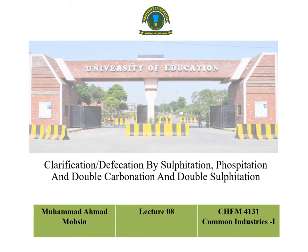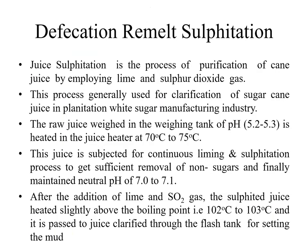Today we will discuss sulfitation, phosphatation, and double sulfitation carbonation of the clarification process. Juice sulfitation is the process of purification of cane juice by employing lime and sulfur dioxide gas. This process is generally used for the clarification of sugarcane juice in the plantation white sugar manufacturing industry.